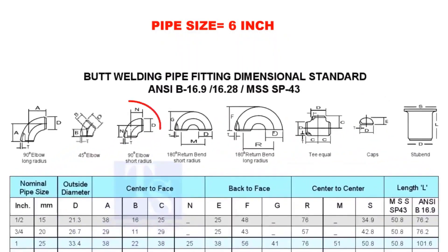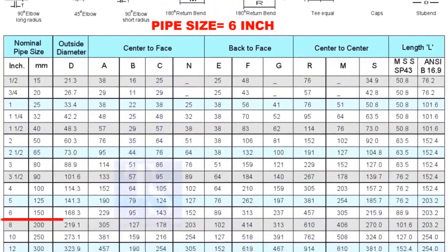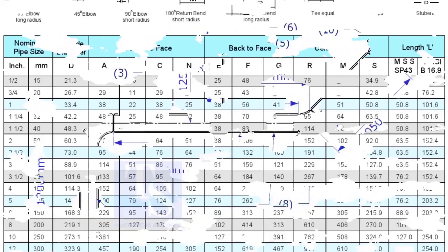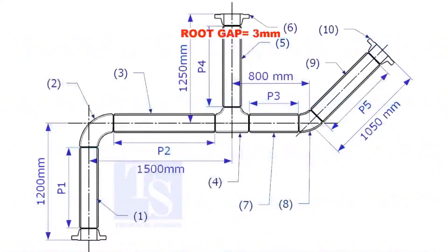Check the takeoff length of the elbow. It is 229mm. Assume the root gap is 3mm.